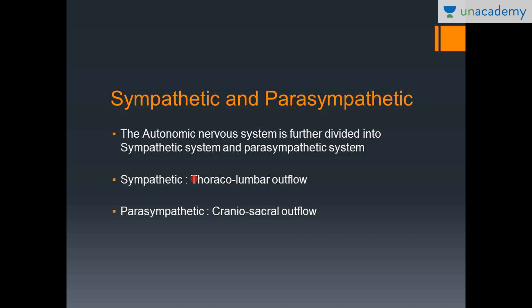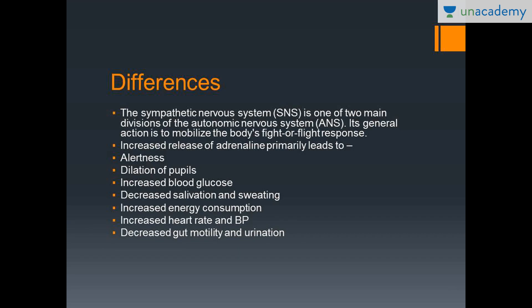So the sympathetic nervous system is called the thoracolumbar outflow and the parasympathetic nervous system is called the craniosacral outflow. These are two things you must remember because they are asked in MCQs straightforwardly — for example, 'the thoracolumbar outflow is the sympathetic nervous system.' So the differences between the sympathetic and the parasympathetic is something that you should know.